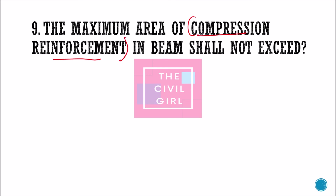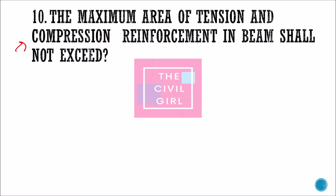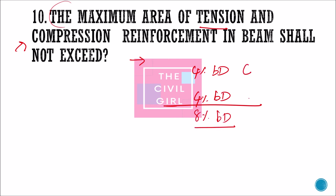The maximum area of compression reinforcement for a beam is also 0.04 bd — the same as for tension reinforcement. So for beams, both tension and compression reinforcement are each limited to 4% of the gross cross-sectional area. A tricky follow-up question: the maximum combined area of tension and compression reinforcement is 4% + 4% = 8% of the gross cross-sectional area.